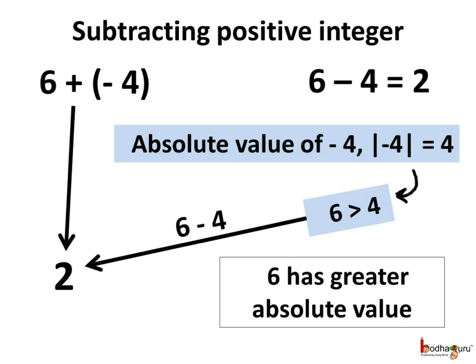For example, 6 minus 4 is equal to 2. Now let's do subtraction as the addition of additive inverse. If we add the additive inverse of 4, that is minus 4, to 6, during addition of numbers with different signs, we put the sign of the number with greater absolute value in the result. Here, 6 has the greater absolute value, so the result would be positive. Then we subtract the absolute values: 6 minus 4 is equal to 2, so the result is 2.